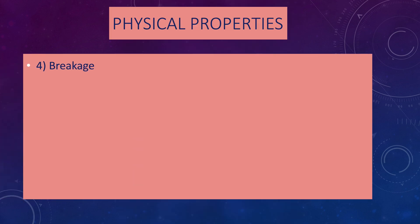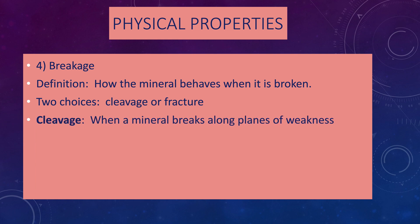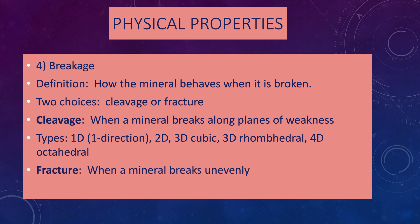Number four is breakage — how the mineral behaves if it gets broken, such as if you drop it or hit it with a hammer. The two choices are cleavage or fracture. Cleavage occurs when the mineral breaks along planes of weakness. The choices for cleavage are 1D (one direction), 2D (two directions), 3D cubic, 3D rhombohedral, and 4D octahedral. Your lab book also describes a 6D, but that's hard to see. If a mineral does not have cleavage, it fractures — meaning it breaks unevenly. There's also a special type called conchoidal fracture.